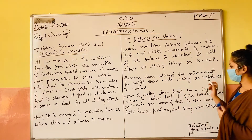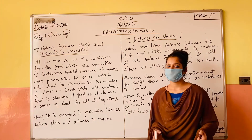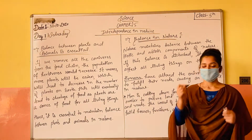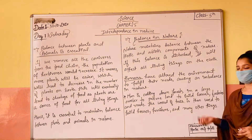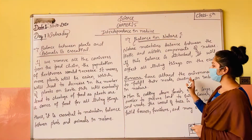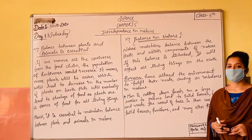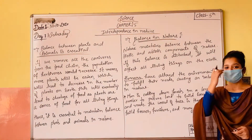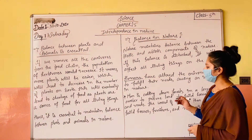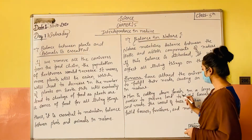Humans have altered the environment to fulfill their needs, causing an imbalance in nature. Abiotic aur biotic mein jo imbalance aa raha hai, woh isliye aa raha hai kyunki hum humans kuch aisi galtiyan karte hain — kuch aisa kaam karte hain — jisse hamaara environment disbalance hota ja raha hai. Man is cutting down forests in large numbers to procure land to build houses, factories and roads.